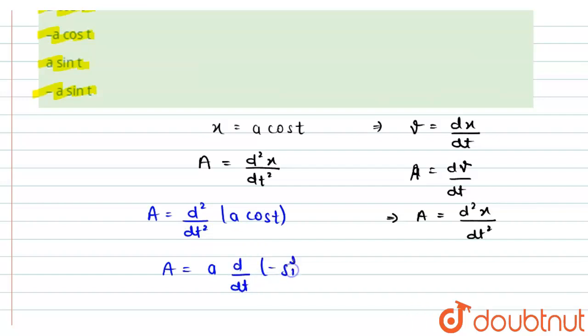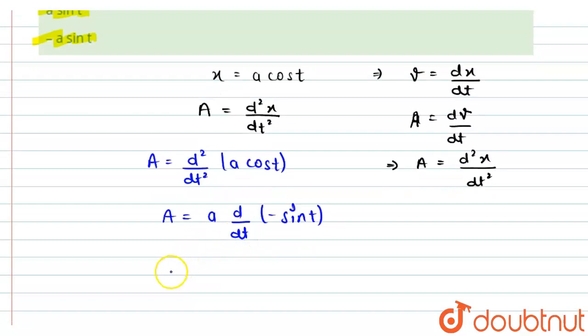And further if I differentiate sin t, we will get... so minus we can take out, and the differentiation of sin t would be cos t. So this will be minus a cos t.